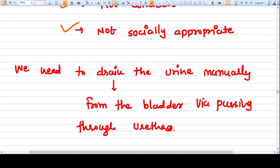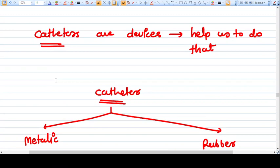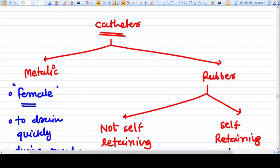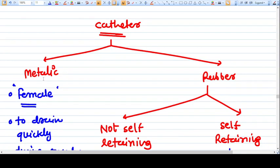In the catheter, we just pass a tube from the urethra to the bladder and drain the urine manually. The catheter is a device to help with this function. Catheters are basically of two types: they may be made up of metallic or metal components, and many are made up of rubber also.